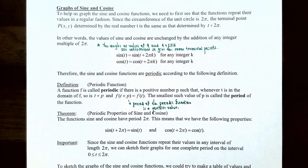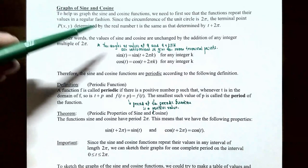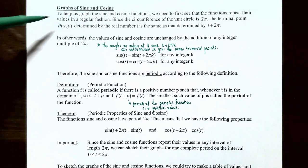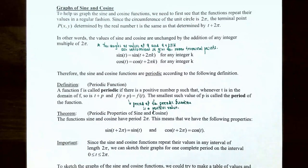Let's talk about the graphs of the sine and cosine functions. To graph them, we need to see that the functions repeat their values in a regular fashion. Since the circumference of a unit circle is 2π, the terminal point P(x, y) is determined by a real number t. Tracing along the unit circle a distance of t radians — clockwise if t is negative, counterclockwise if t is positive — the terminal point for t is also the terminal point for t + 2π. So the values of sine and cosine are unchanged if you add an integer multiple of 2π to the argument.